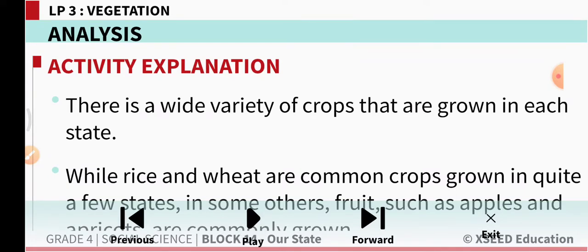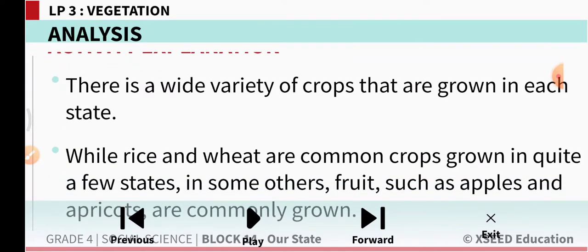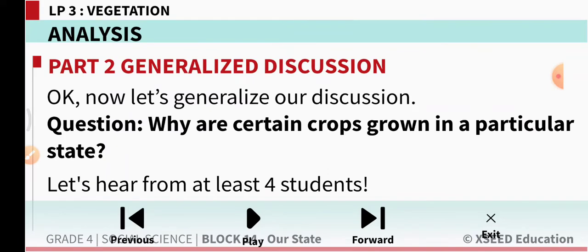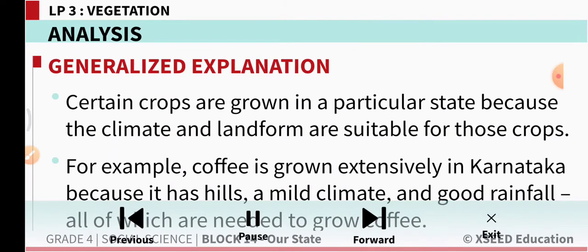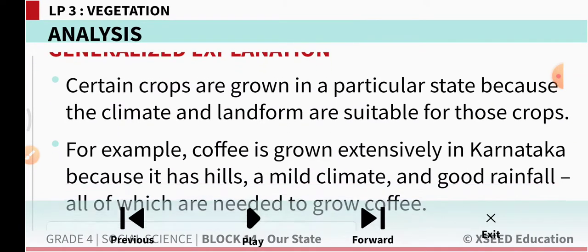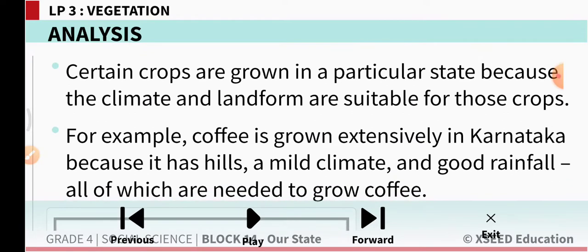There is a wide variety of crops that grow in each state. While rice and wheat are common crops grown in quite a few states, in some others, fruits such as apples and apricots are commonly grown. Certain crops are grown in a particular state because the climate and the landform are suitable for those crops.